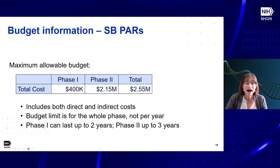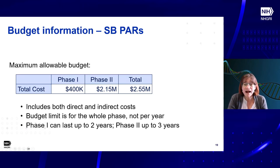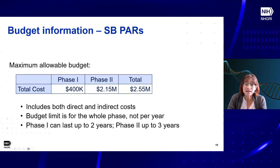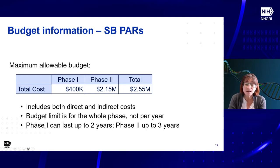As far as the budget for small business PARs: for those not familiar, they're divided into two phases — Phase 1 and Phase 2. Both phases include both direct and indirect costs. The limit is $400,000 for Phase 1 total — not per year — including both direct and indirect costs. For this announcement, Phase 2 is $2.15 million. Phase 1 can last up to two years and Phase 2 can last up to three years. These are not the standard SBIR timelines or budgets.